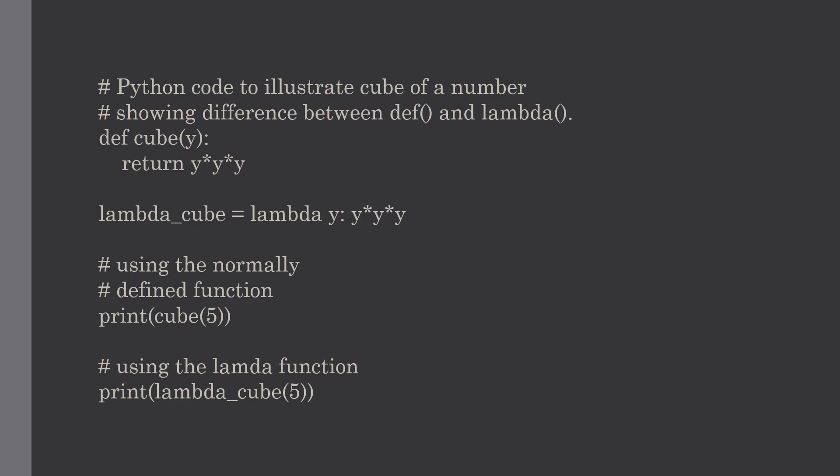After execution we also need to return the result using the return keyword. But with lambda, the definition does not include a return statement — it always contains an expression that is returned. We can also put a lambda function anywhere a function is expected and we don't have to assign it to a variable at all. This is the simplicity of the lambda function.